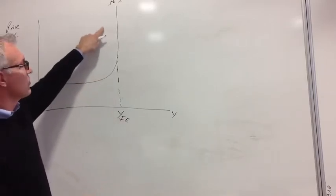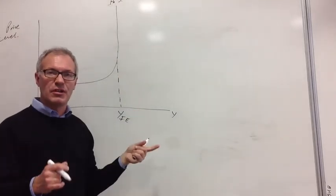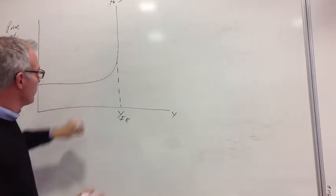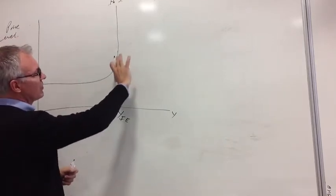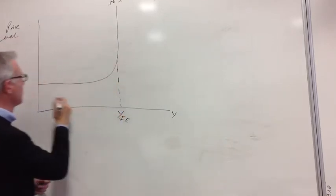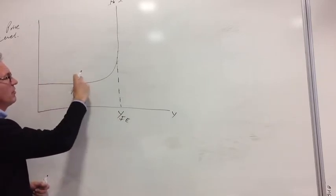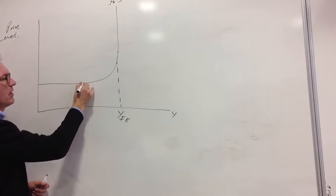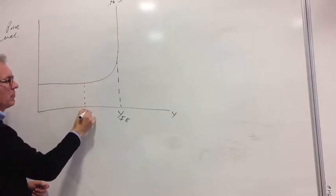Keynes argued that there was no difference between the long run and the short run in terms of aggregate supply. So he argues that we have an aggregate supply line that looks like this. We start off with a perfectly horizontal, perfectly elastic aggregate supply line up to this point Y1.